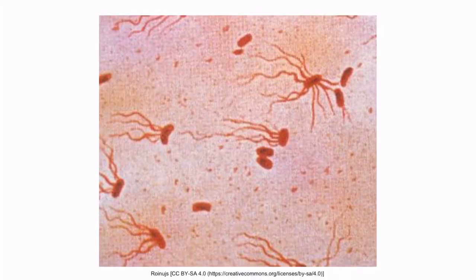Flagellated. This is a gram stain of Salmonella. Notice that it appears red or pink under the microscope and is rod-shaped. Also notice that it's a flagellated organism — you can see the flagella right here. With this in mind, let's return to the image.